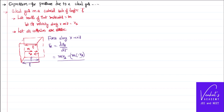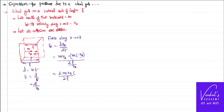The molecule travels a distance L to the wall and returns another distance L, so the total distance is 2L. Using distance = velocity × time, we get time = 2L / Vx. Substituting into the force equation gives Fx = 2MVx / (2L/Vx) = MVx² / L. The 2s cancel, giving MVx² / L.